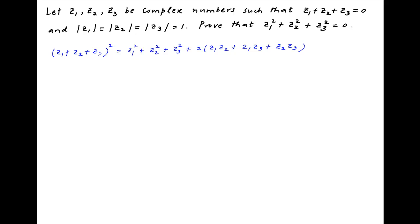Now, we are given that z1 plus z2 plus z3 is equal to 0. Therefore, the left hand side of this equation is equal to 0. It therefore follows that z1 squared plus z2 squared plus z3 squared is equal to minus 2 times z1z2 plus z1z3 plus z2z3.